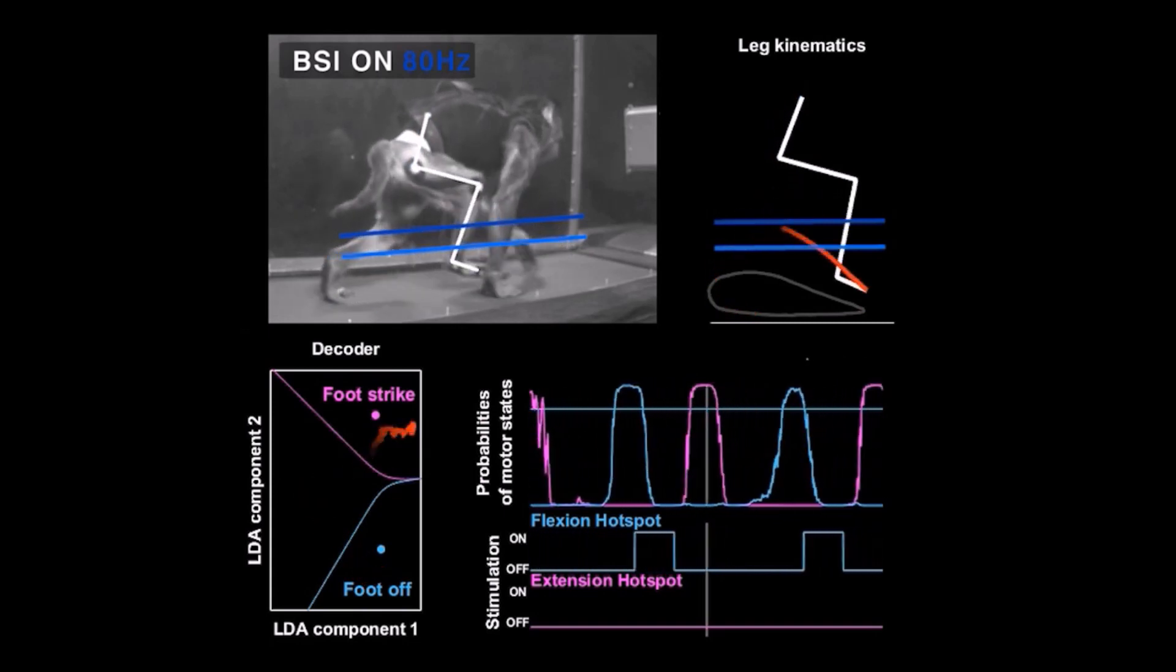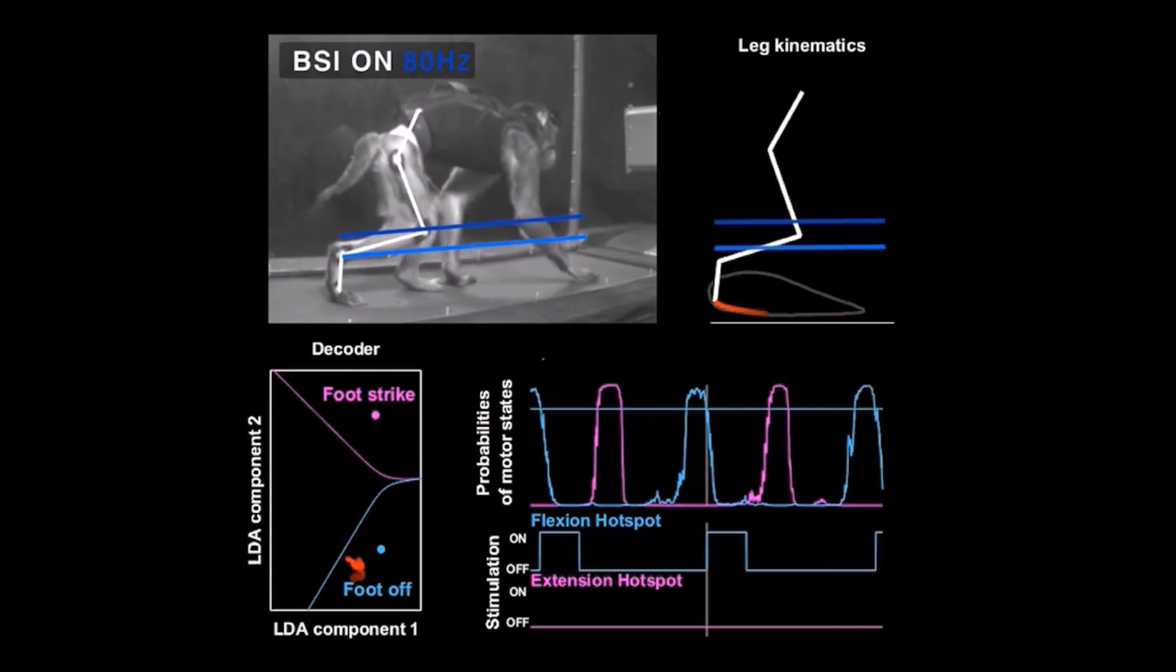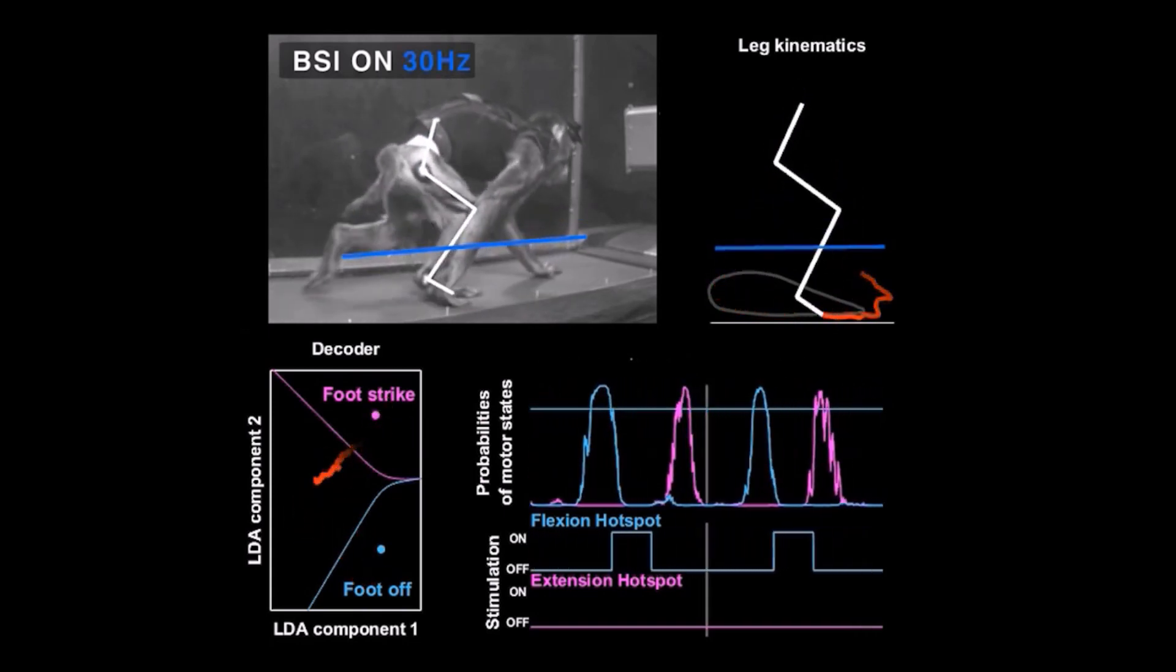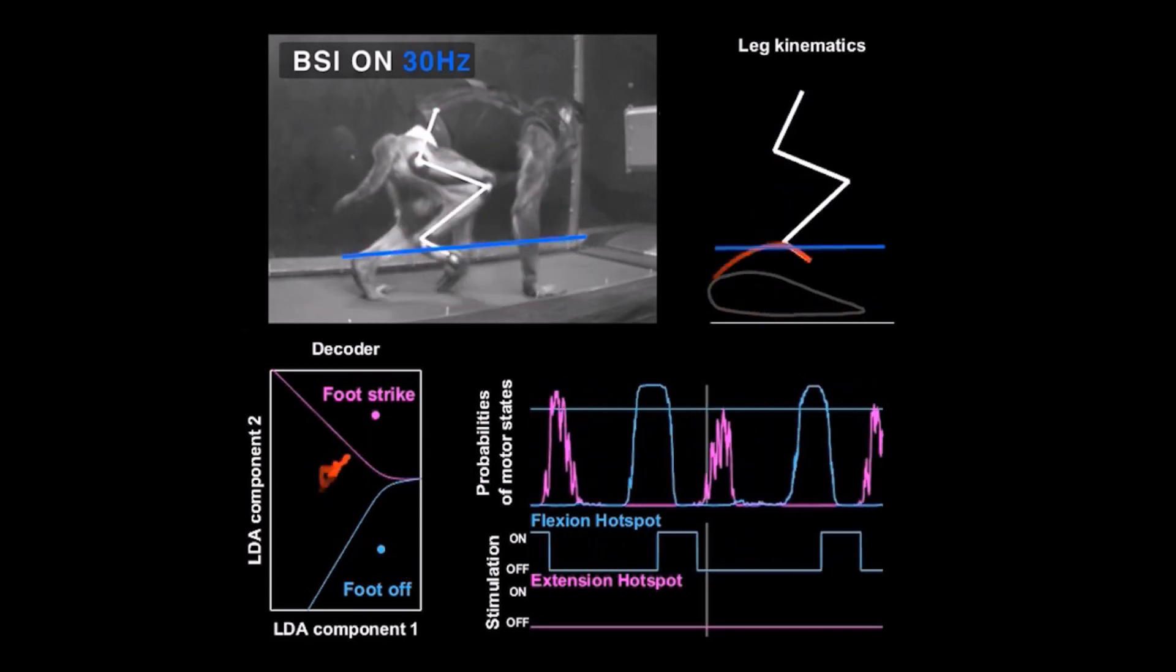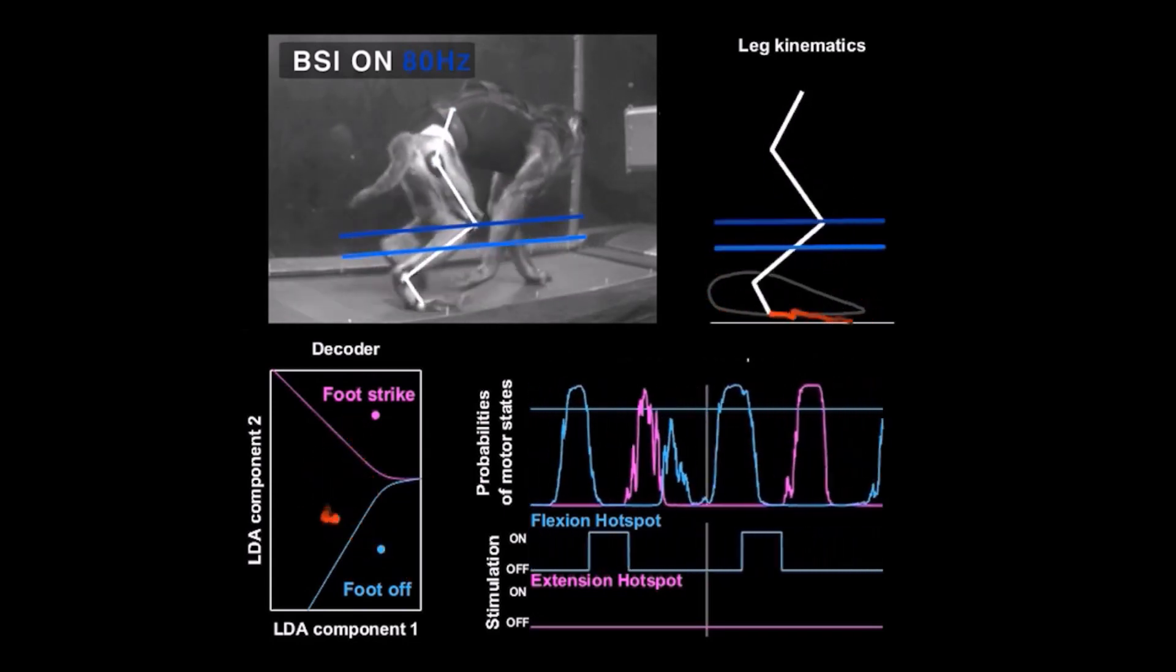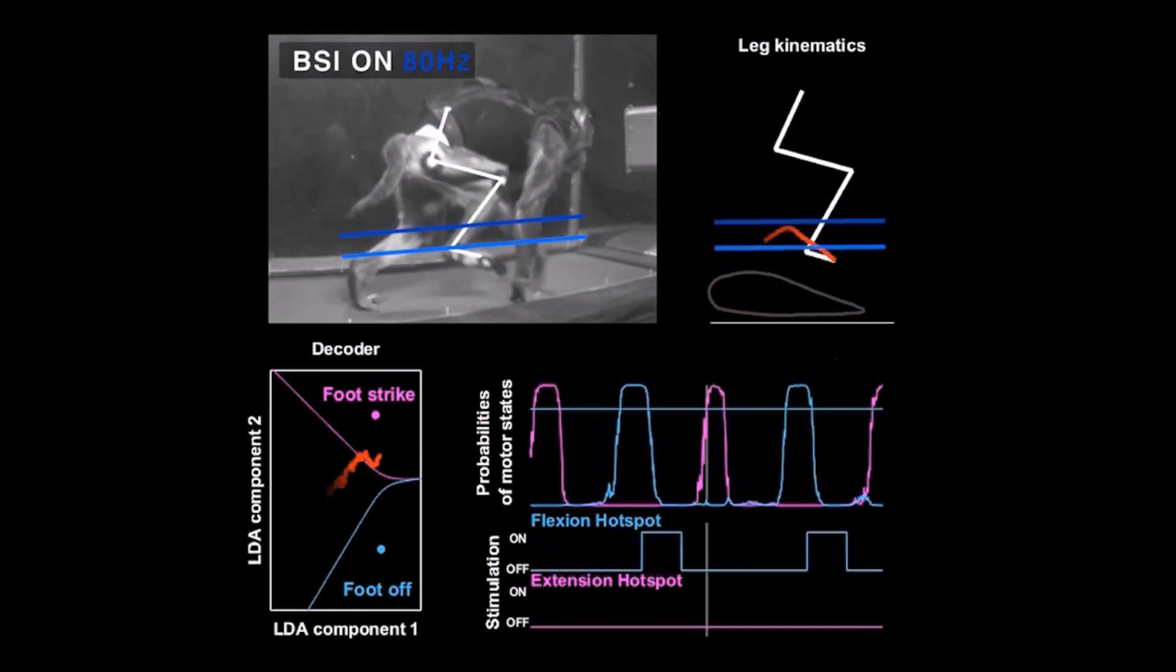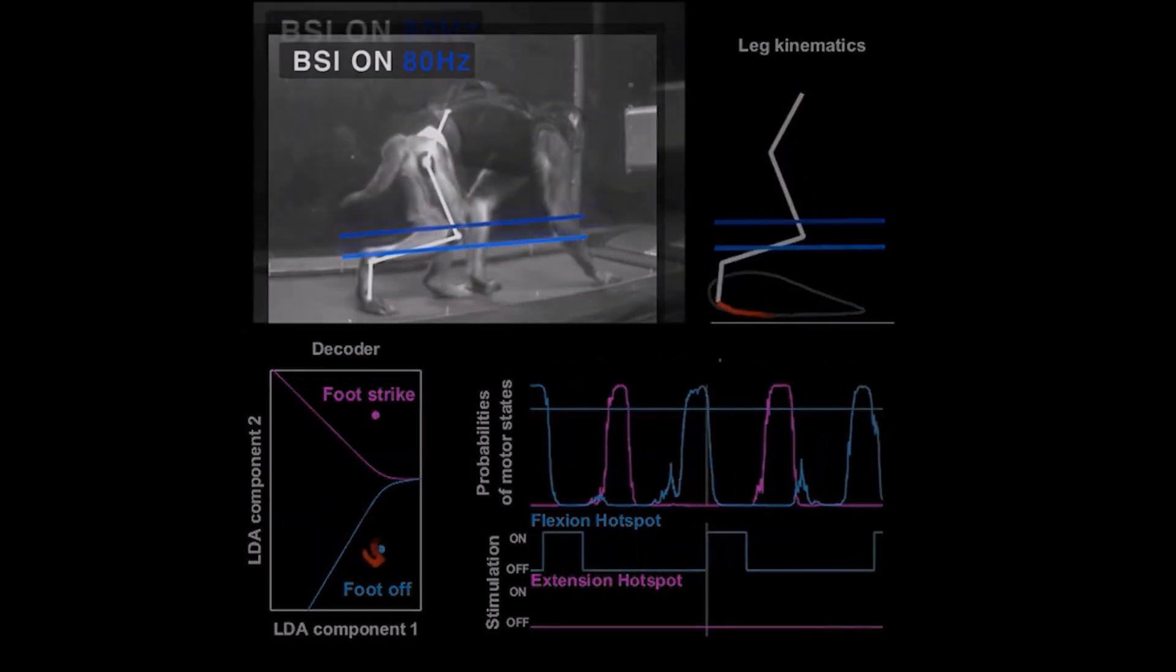The decoder accurately triggered the stimulation protocols without disrupting locomotor movements since the stimulation targeted the proprioceptive feedback circuits that naturally contribute to activating leg muscles during locomotion.